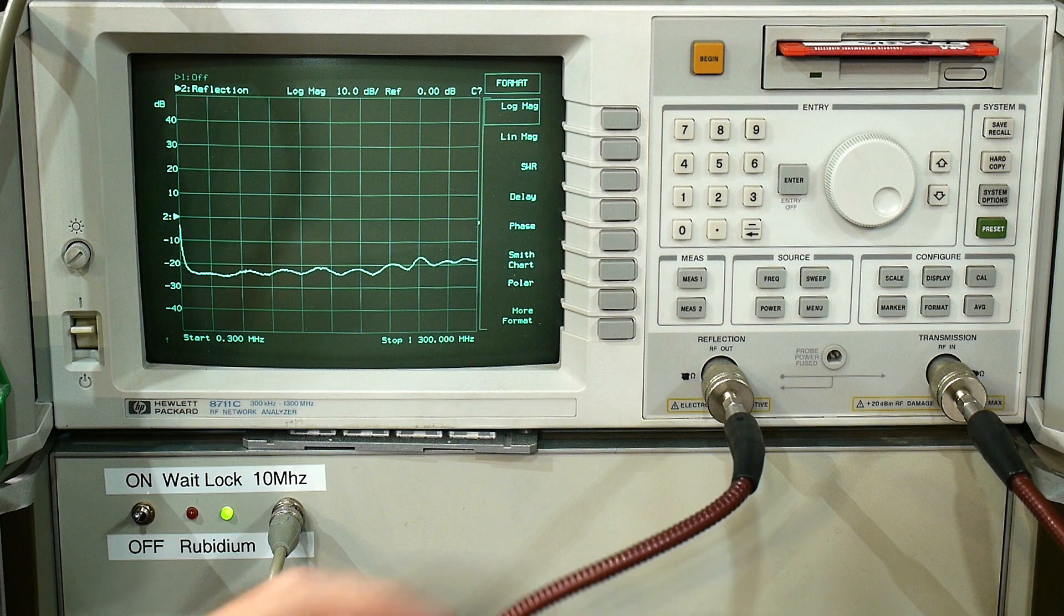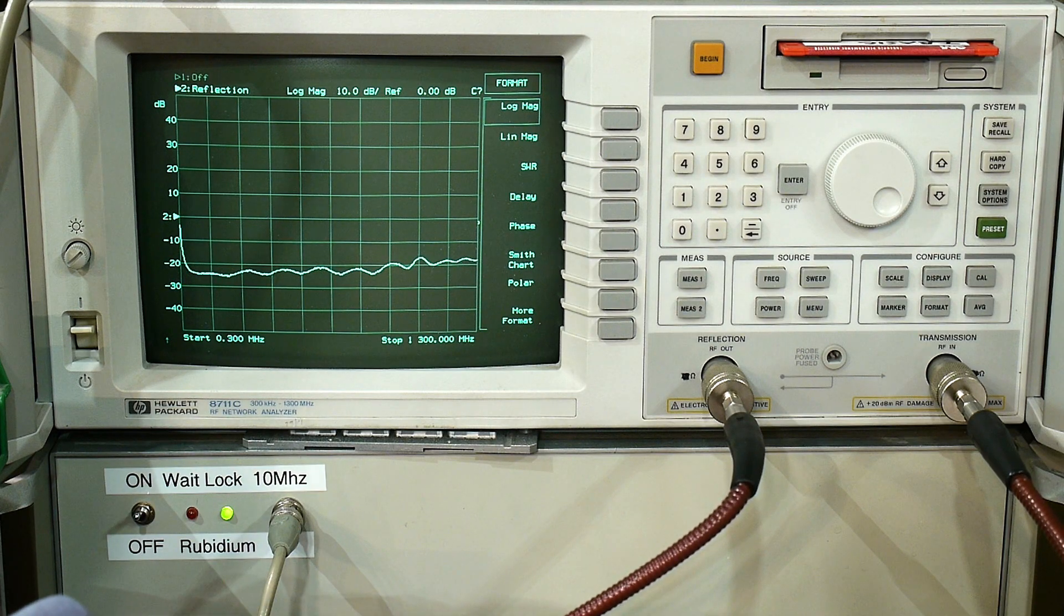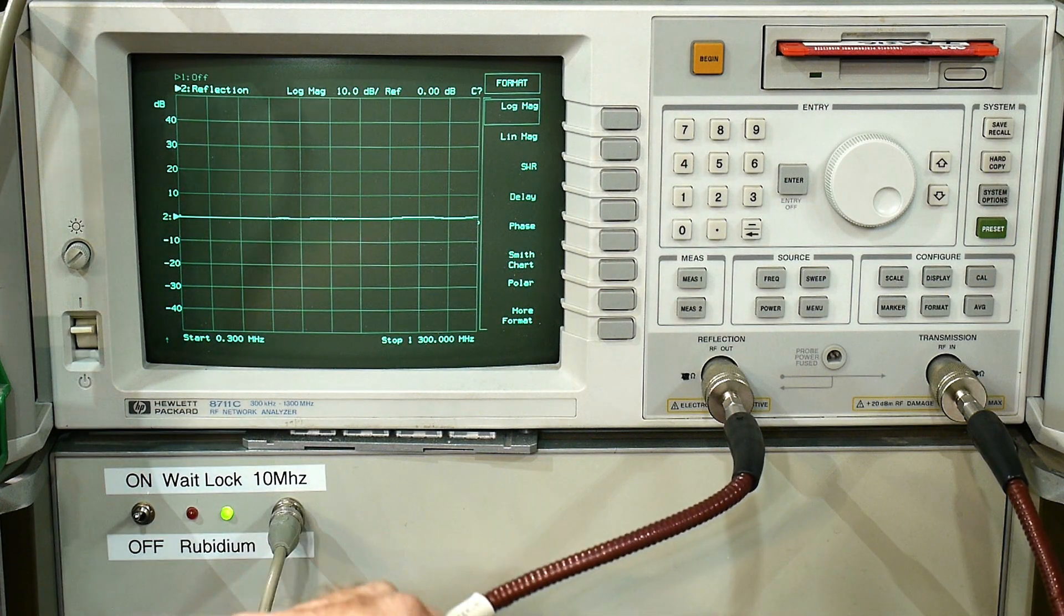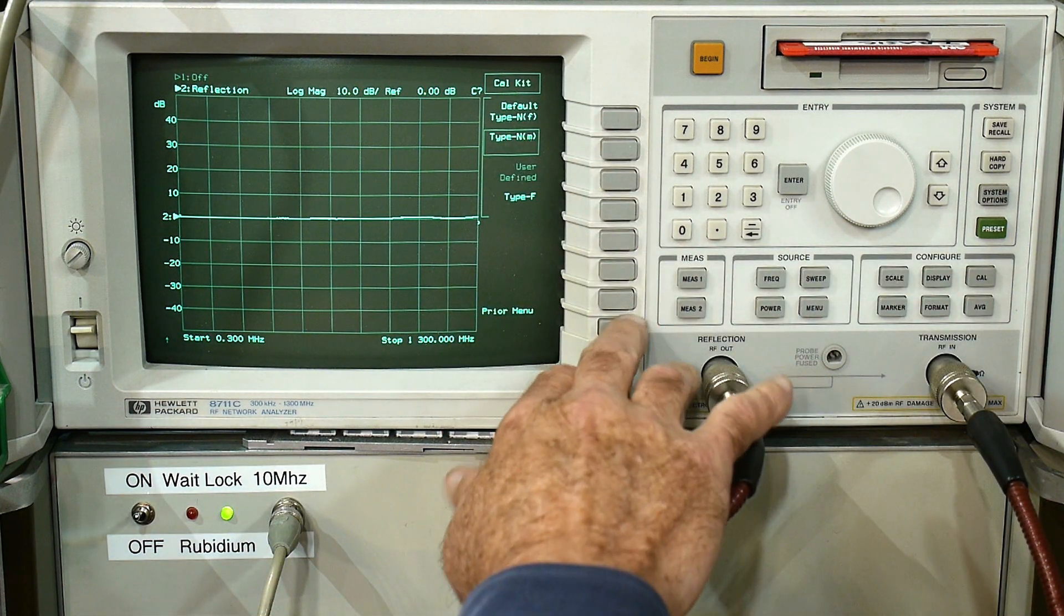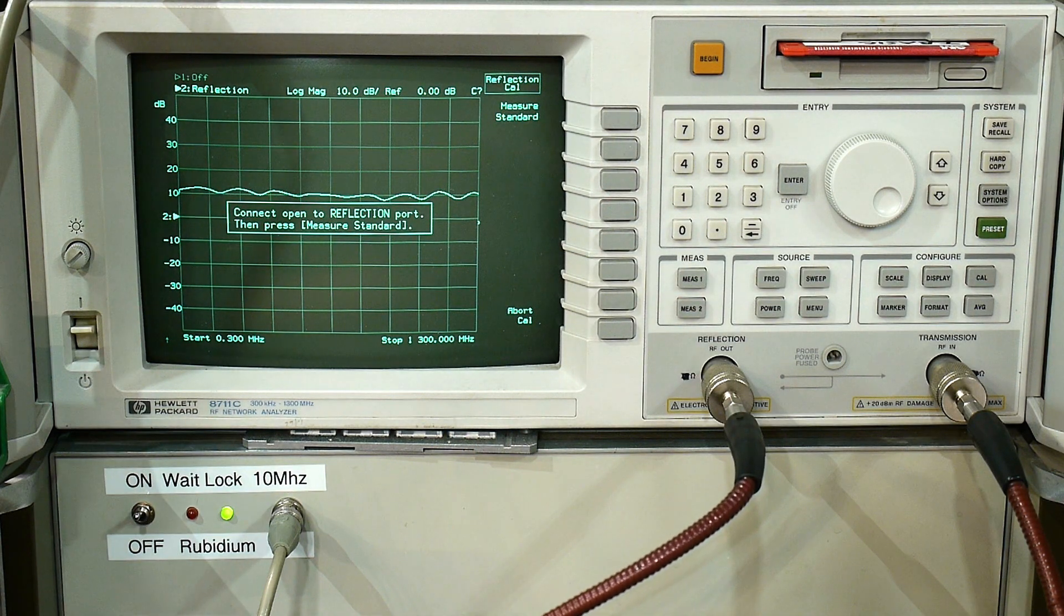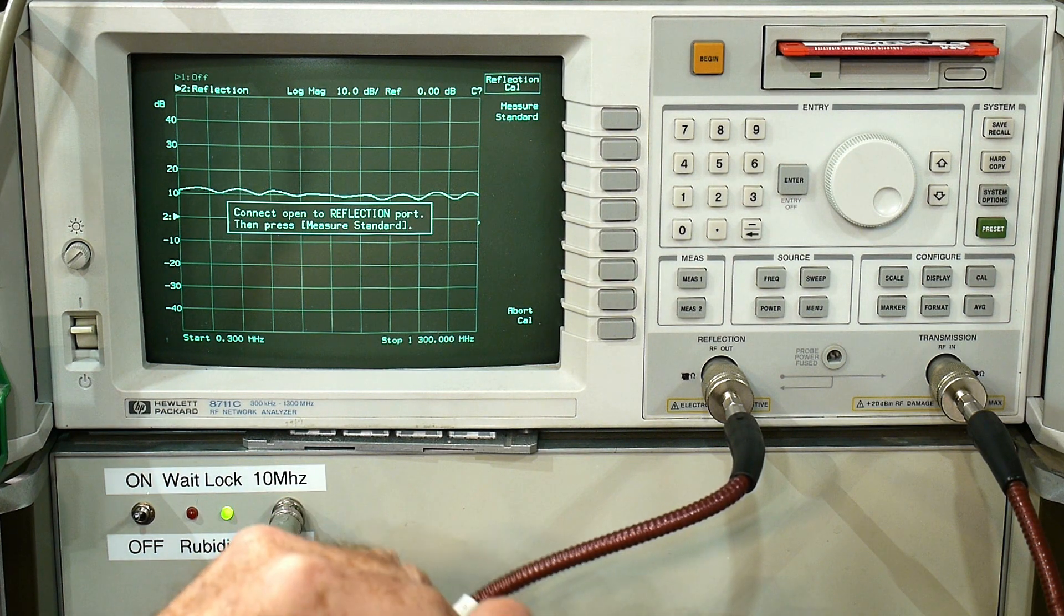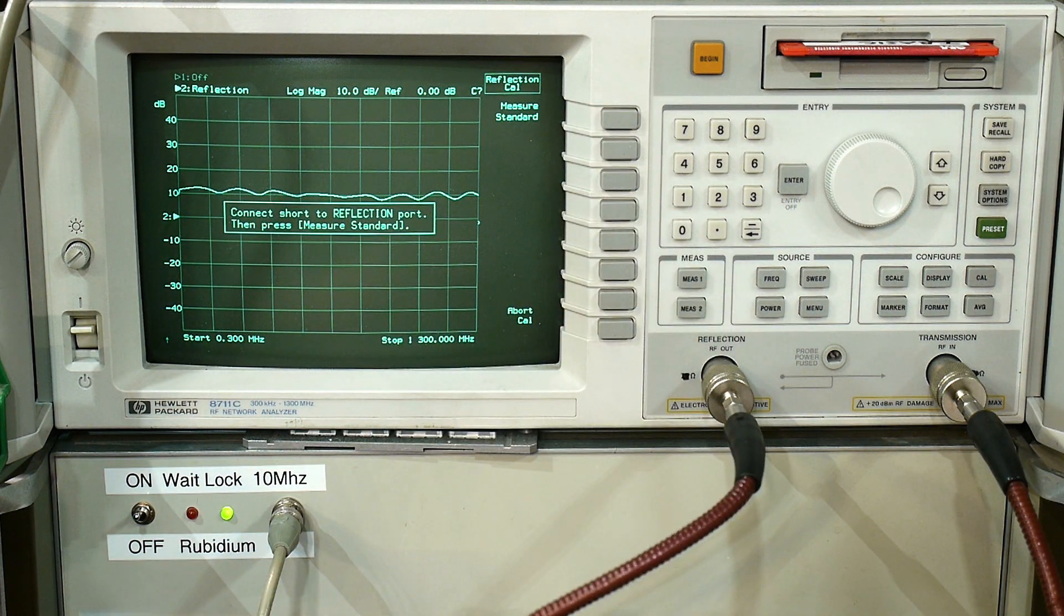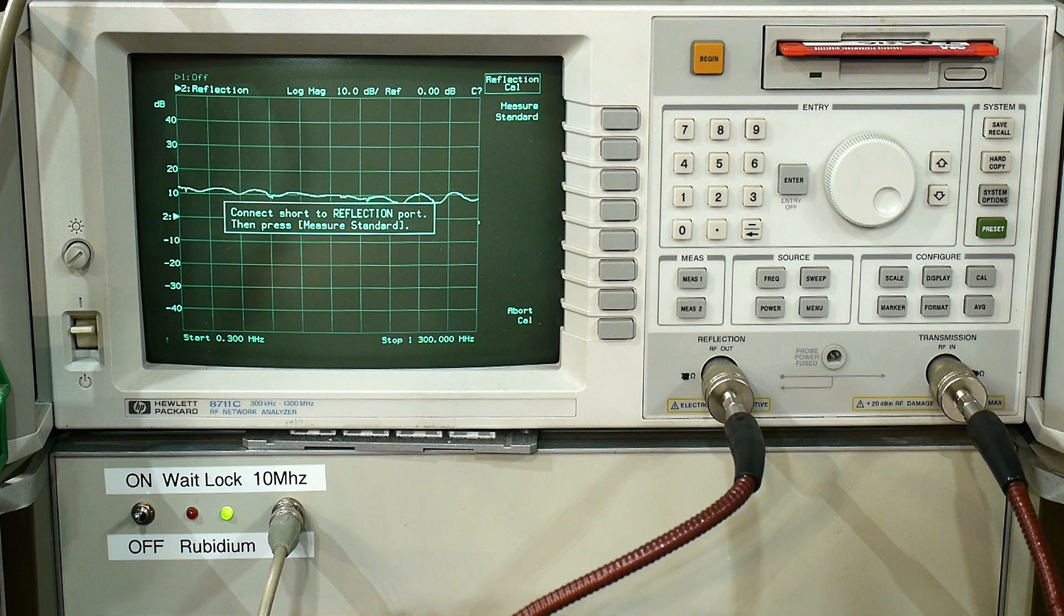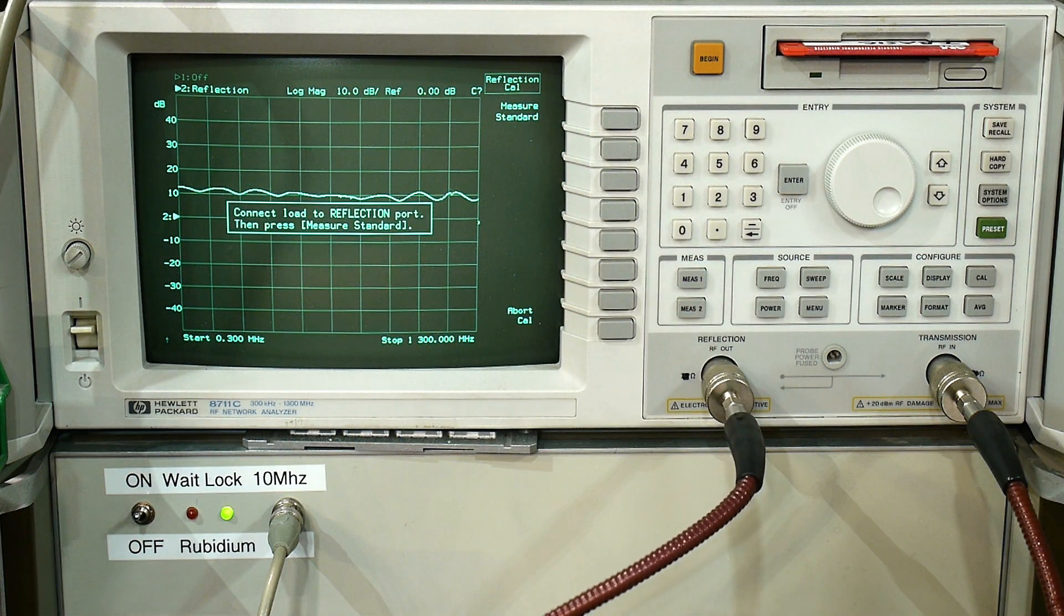Let's calibrate this thing to make sure that we're making good measurements first. Cal, cal kit type in, one part calibration. It says that we need an open. So we will put in an open. Let's put in a short. And let's put in a load.